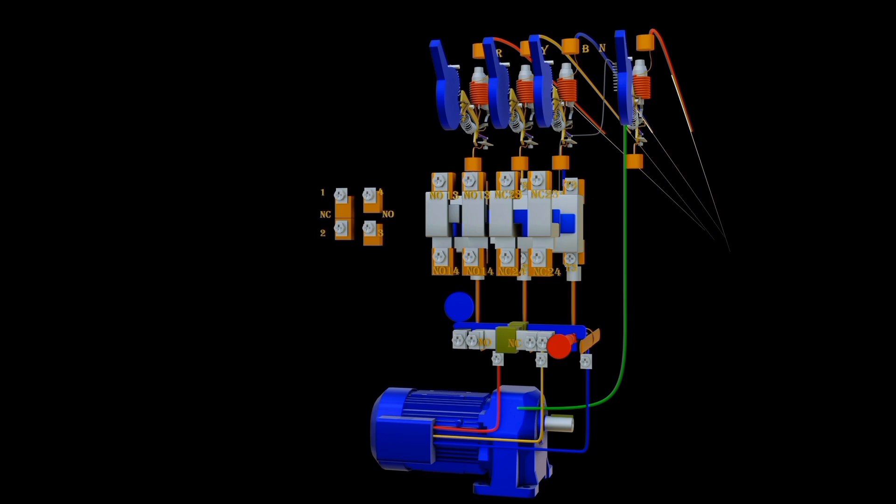Then, the control wire conductor connected from the single-pole circuit breaker passes through overload relay normally closed contacts, then to the normally closed contacts of push button, that is stop push button terminal 1.